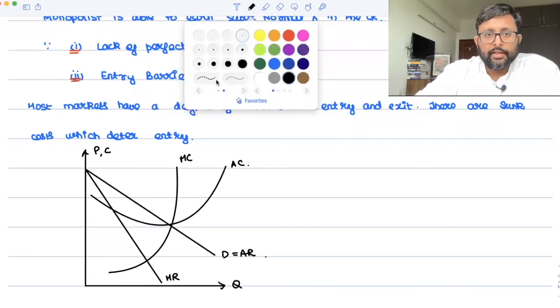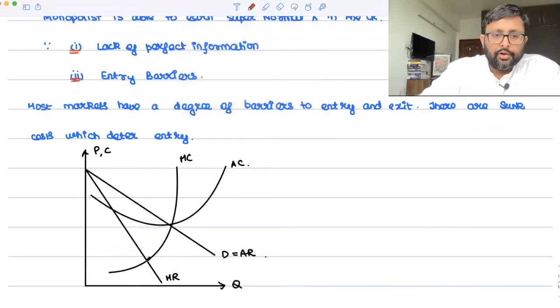Your MC equals to MR comes here. Your MC equals to MR come here. And you will be charging this much of price. And your demand equals to supply. For the perfectly competitive market, it comes here.